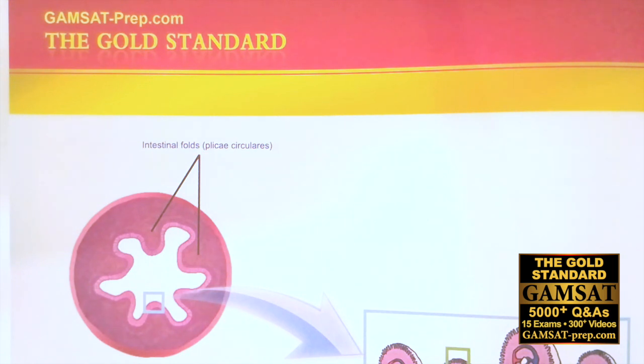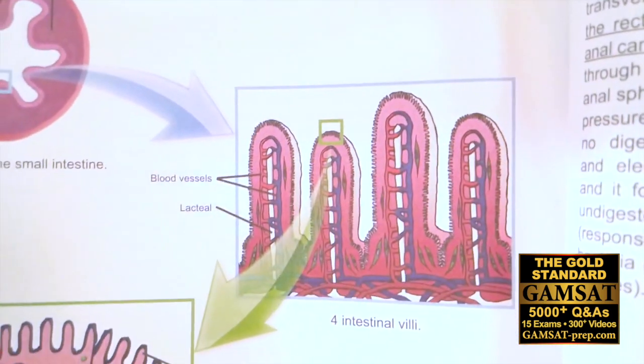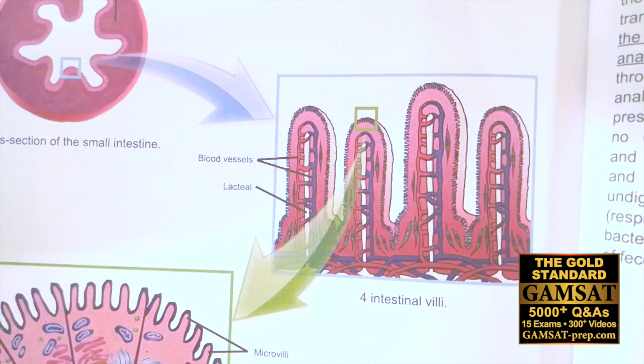The remarkable thing about the small bowel are all the ways in which we can see it increases surface area for absorption. You can see these intestinal folds on a gross level in cross-section, and then when you look inside of that little blue box we can look more closely and see these finger-like projections called intestinal villi.